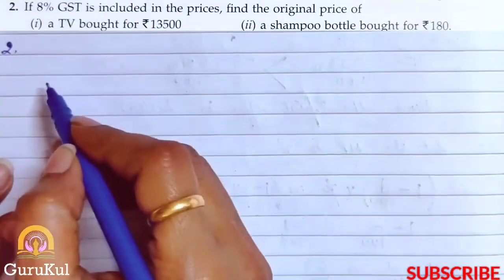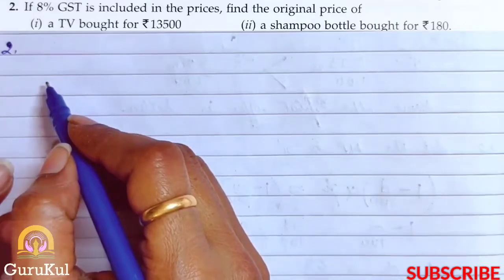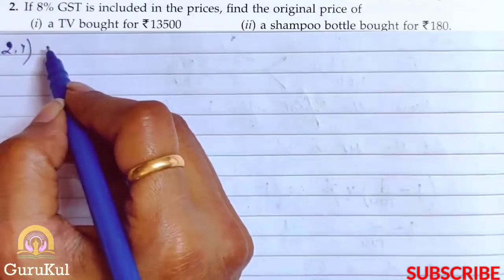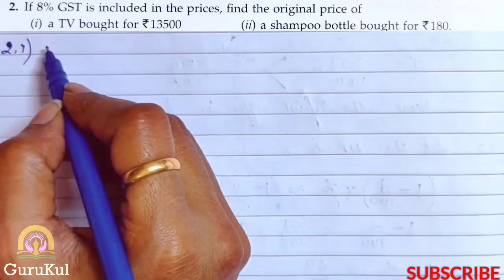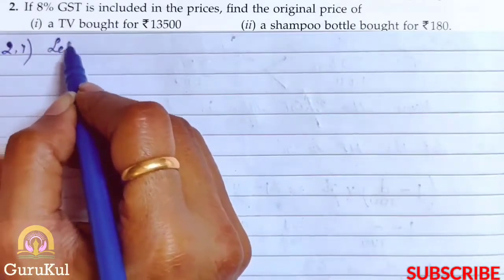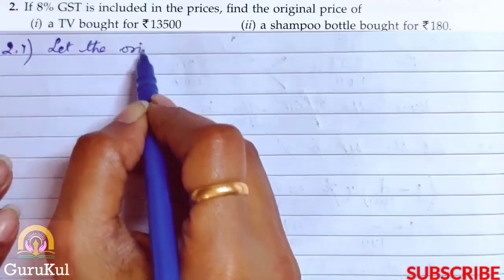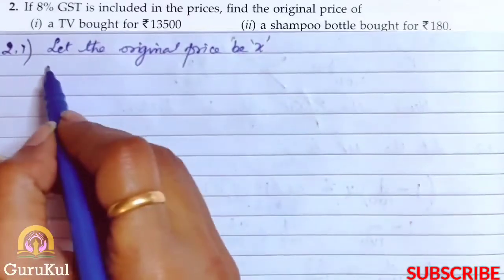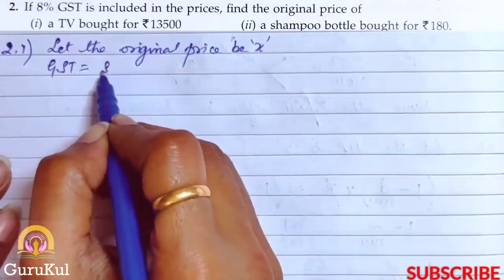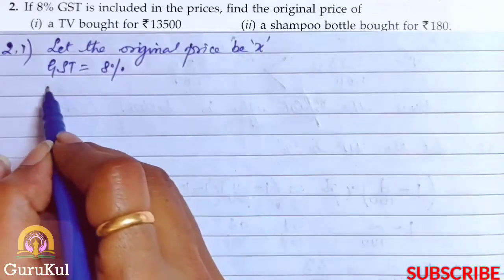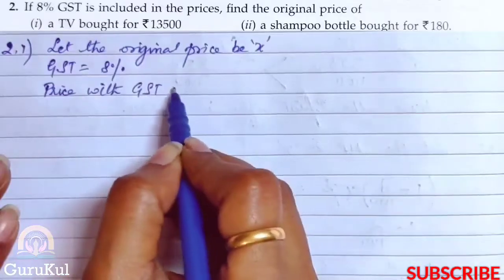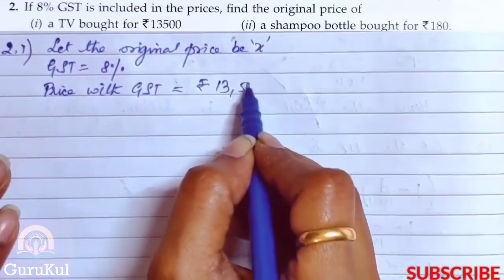Question 2: If 8% GST is included in the prices, we need to find the original price. The first item is a TV bought for ₹13,500. The selling price includes GST. Let the original price be X, and GST is 8%.